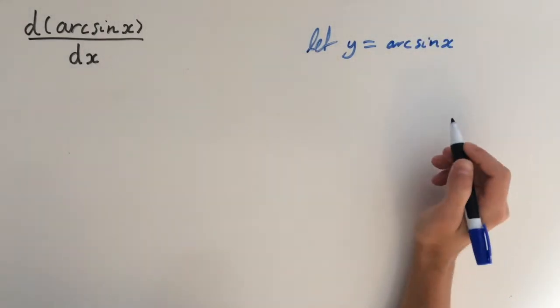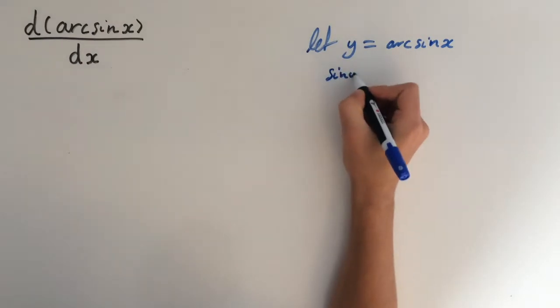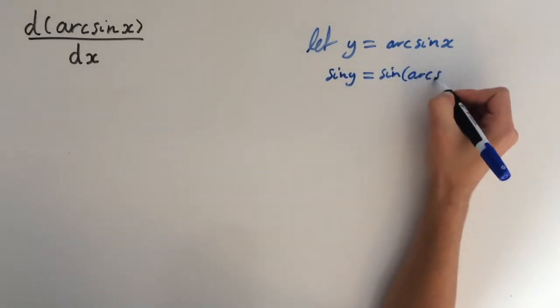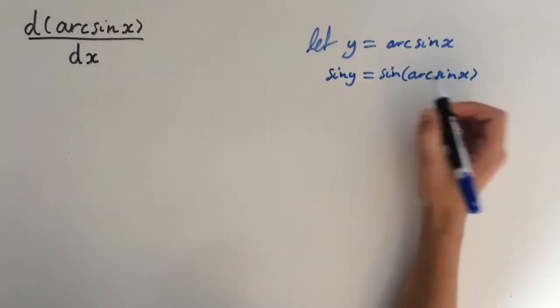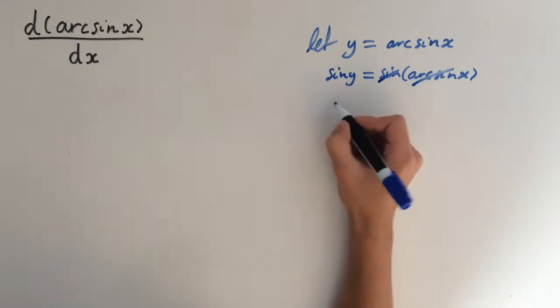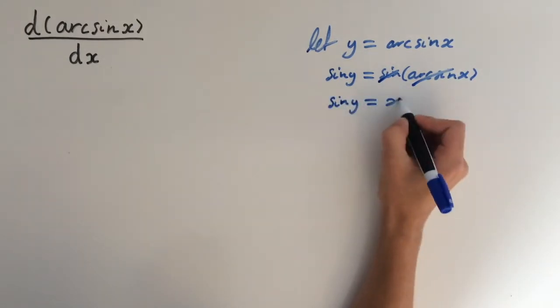And now we want to apply the function of sine to both sides. So we get sine of y equals sine of arcsin(x). But sine and arcsin are inverse functions, so they're going to cancel out. So we're going to be left with sine of y equals x.